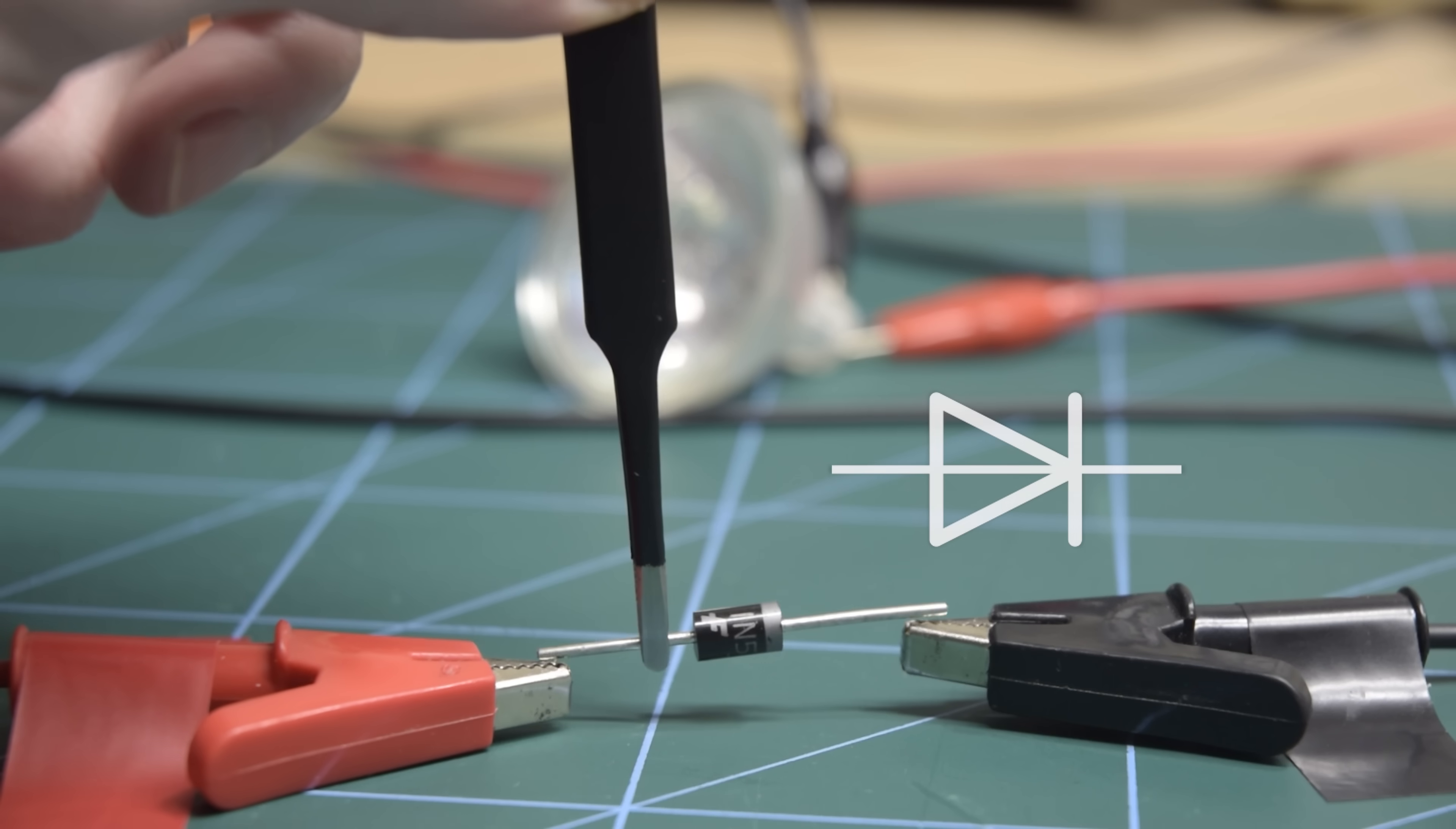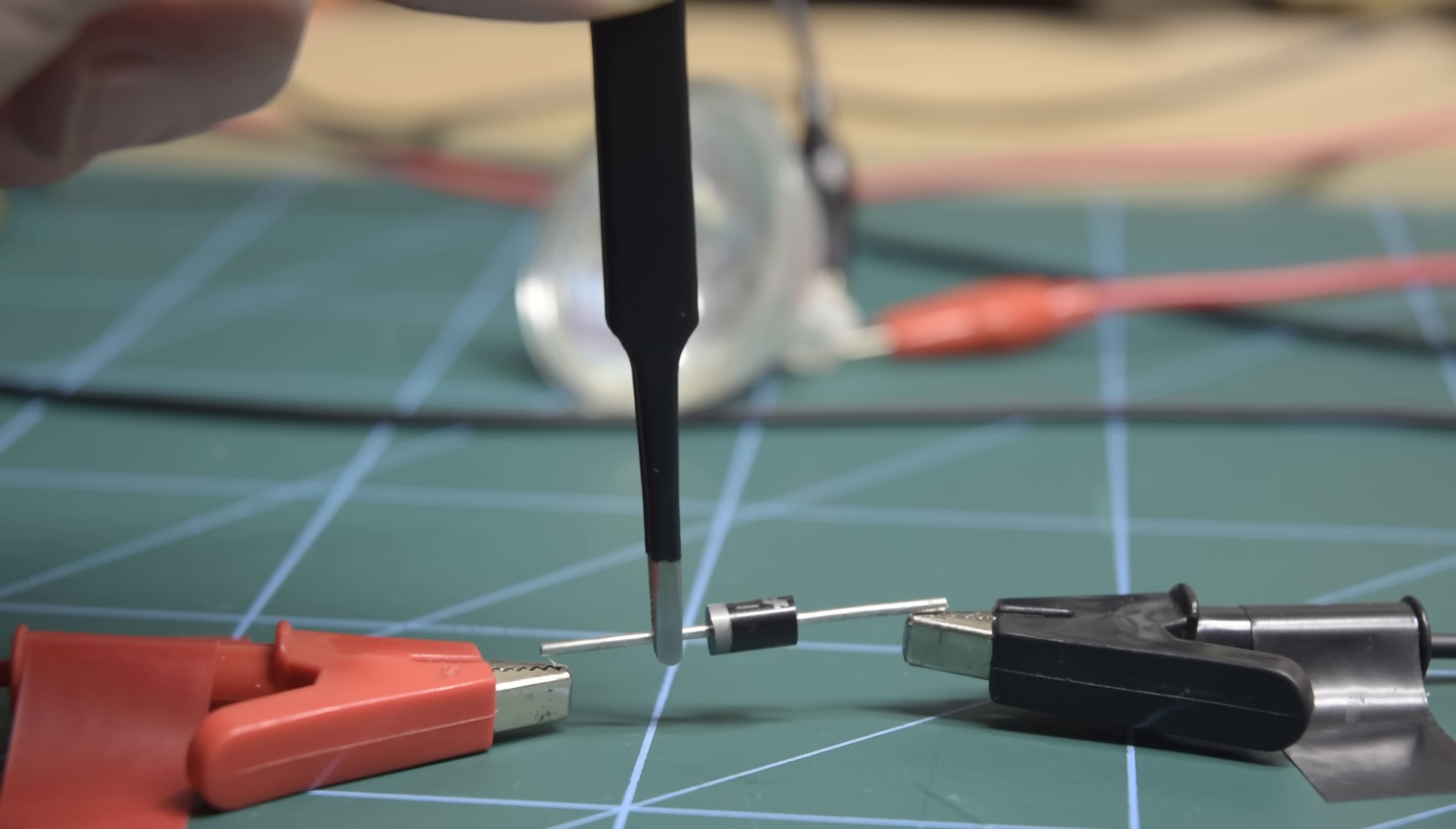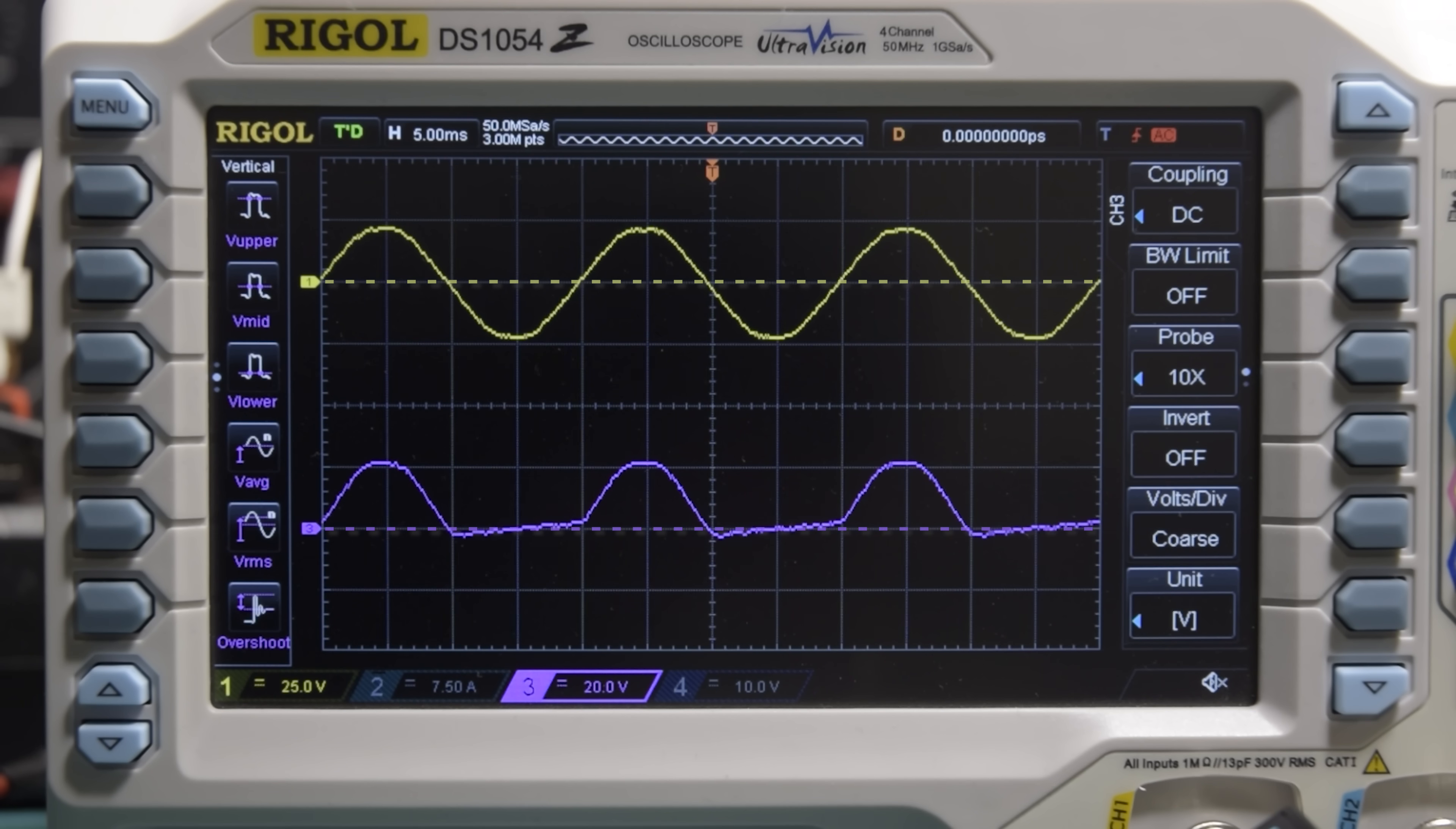This is a diode. It acts as an electrical one-way valve, allowing current to flow in only one direction. We can use a diode to convert AC into DC, simply blocking the negative half of the wave, so all we're left with is positivity. Yay!